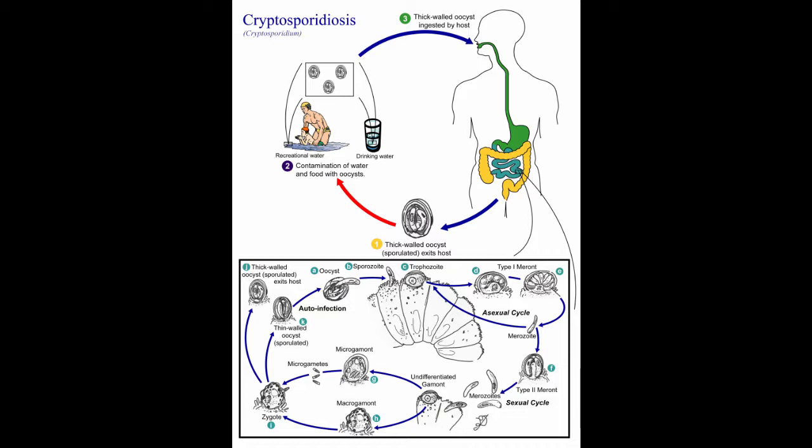That life cycle involves the production of millions more oocysts. If someone were to expel diarrheal faecal matter in a swimming pool, there are over a million oocysts in each gram of faecal contamination. Studies have shown that it takes only one of these oocysts to make somebody ill.